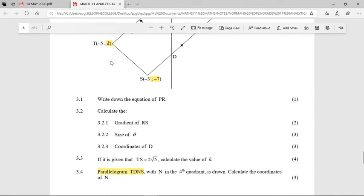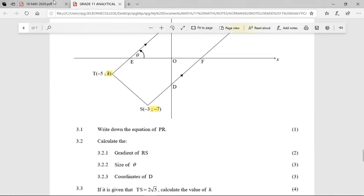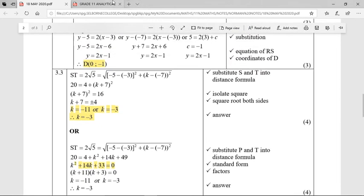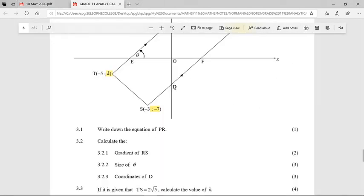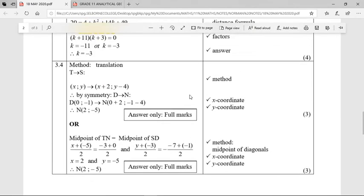So listen carefully. The pattern that emerges going from T down and across to S would have to be the same pattern as D going down and across to N. How many down does it go from T to S? Well, T's y value is negative 3. S's y value is negative 7. So it is 4 down. And how many across is it going from T to S? Negative 5 to negative 3 is 2 right or across. So if D's coordinate was 0 and negative 1, we are going to have to go 4 down and 2 across. So 4 down will take us to negative 5 for y. And 2 across will take us to 2 for x.